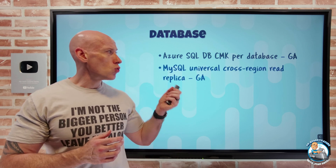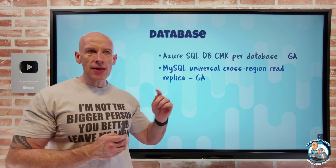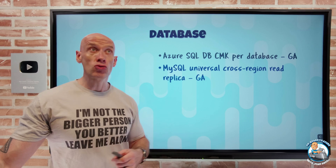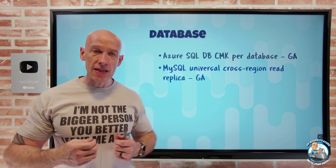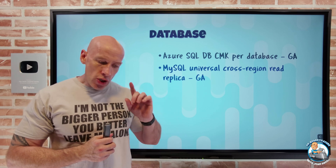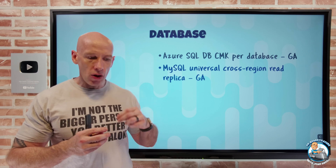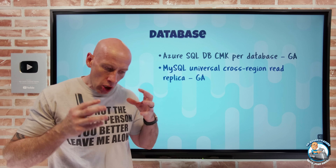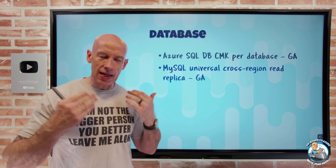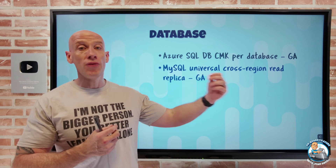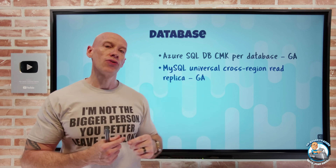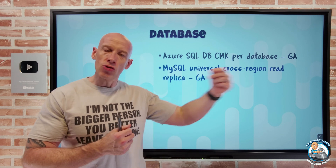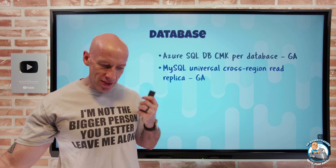MySQL Flexible now has universal cross-region read replicas. This means it doesn't have to be paired regions — you can have up to 10 asynchronous read replicas, which is useful for DR and for providing a local copy for read or analytics activity. This uses native MySQL engine binary log file replication. When you add a replica, it's initially a clone of the source server configuration in the same resource group and subscription. Once created, you can move it to a different resource group or subscription and change the configuration — just don't shrink it too much, as it needs to keep up with asynchronous changes.